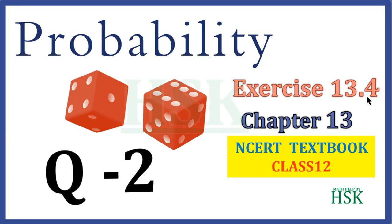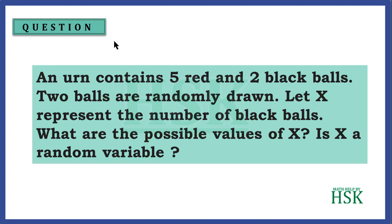Question number two of exercise 13.4 from the chapter probability. The question is: an urn contains five red and two black balls. Two balls are randomly drawn.